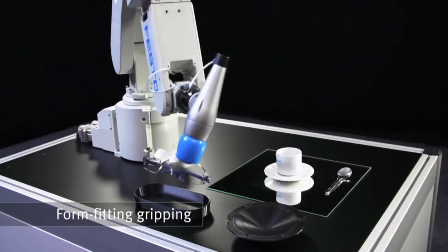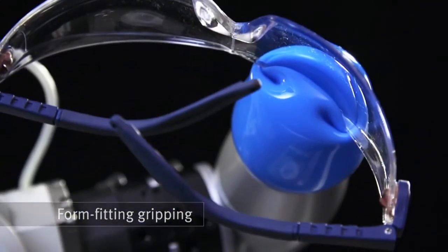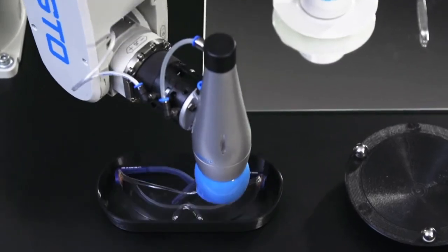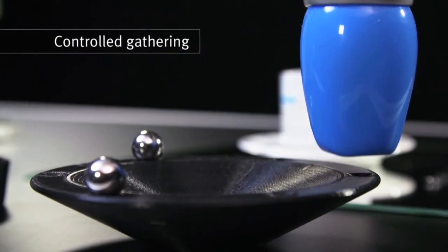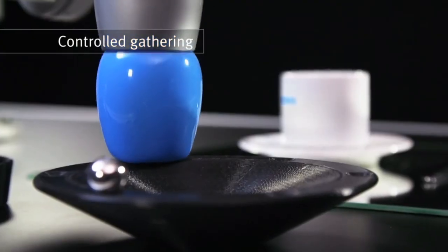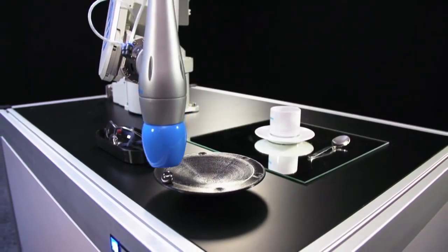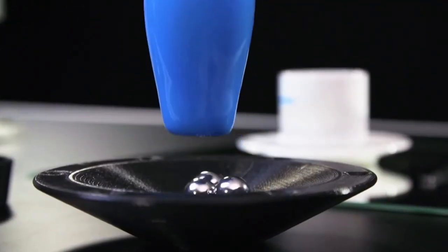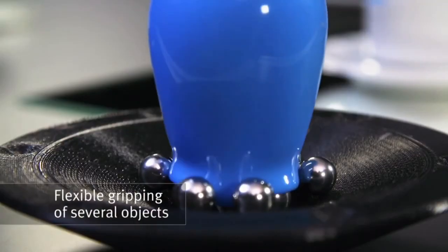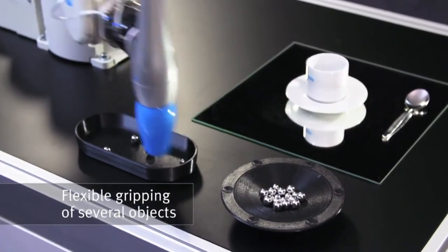The chameleon is able to catch a variety of different insects by putting its tongue over the respective prey and securely enclosing it. The flex-shaped gripper uses this principle to grip the widest range of objects in a form-fitting manner. Using its elastic silicone cap, it even can pick up several objects in a single gripping process and put them down together, without the need for manual conversion.